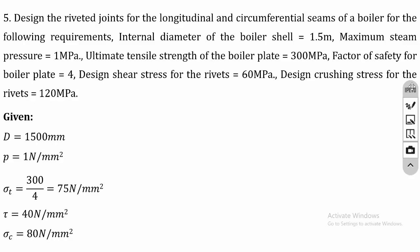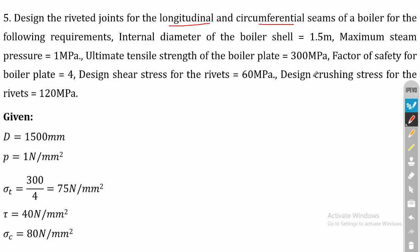In this lecture we are going to discuss the design of riveted joints for boilers. In boiler joints we have two types of riveting: one is the longitudinal joint and another is the circumferential joint. We have already solved two problems on design of lap joint and butt joint, considering the joint as a longitudinal one. For the circumferential joint the design procedure will be somewhat different, and we have to calculate for each type separately.